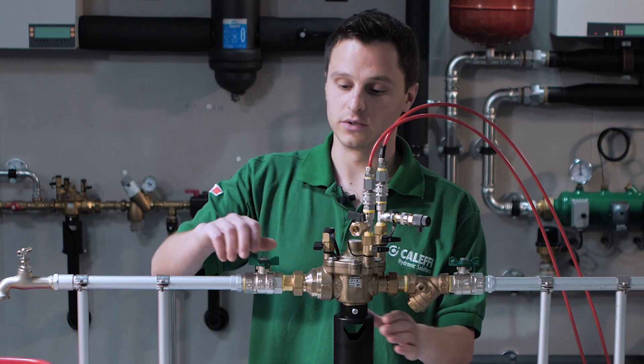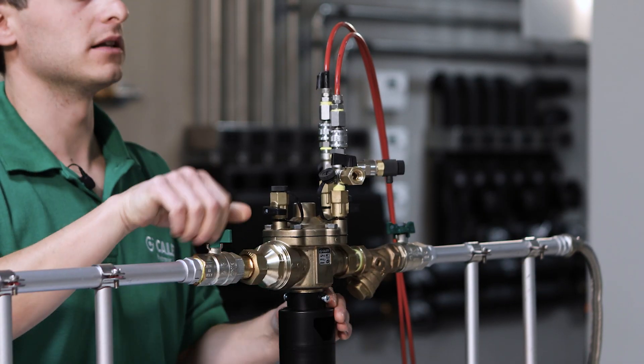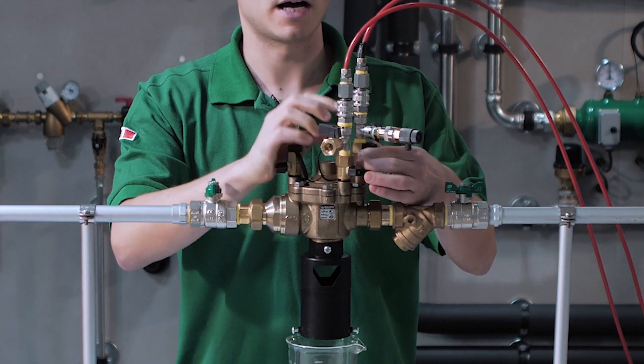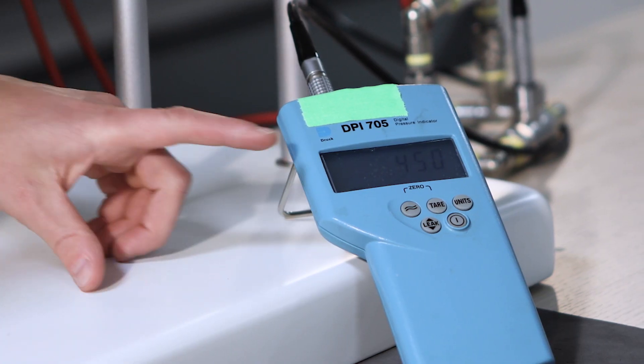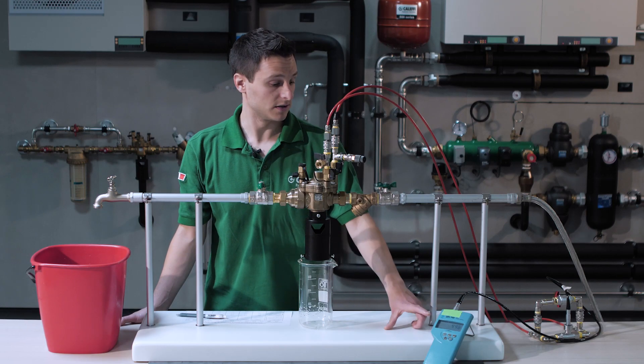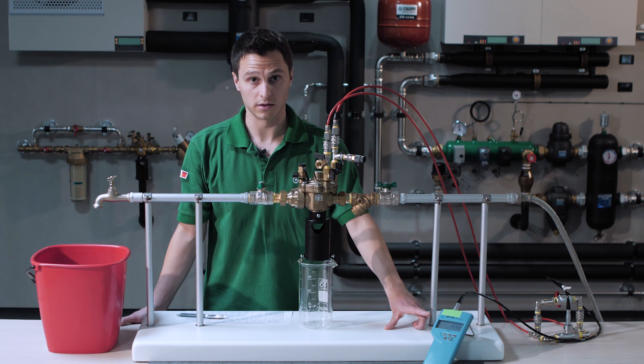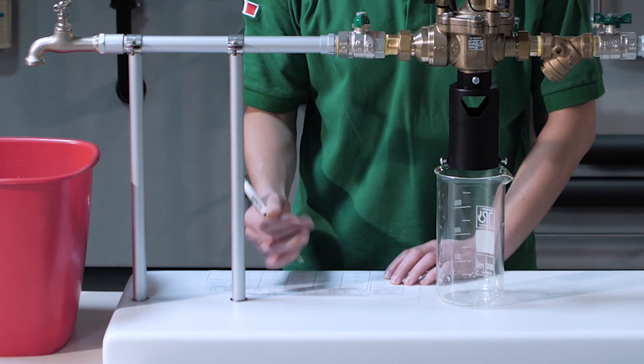As the first check, with the downstream shutoff valve closed, verify that the differential pressure between the upstream test port and intermediate chamber test port is at least 340 millibar. In our situation, the value is greater than 340 millibar, so we can note this on the inspection and maintenance protocol.